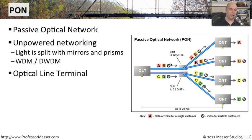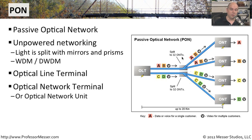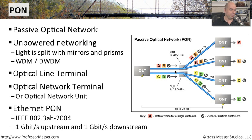You use something called an Optical Line Terminal to send all of this information and receive it on the other side. There's also an Optical Network Terminal — also referred to as an Optical Network Unit — that sits in the middle and helps split the signal and send it off to the client location. This uses a standard called 802.3ah from 2004, and it supports as much as one gigabit upstream and one gigabit downstream.